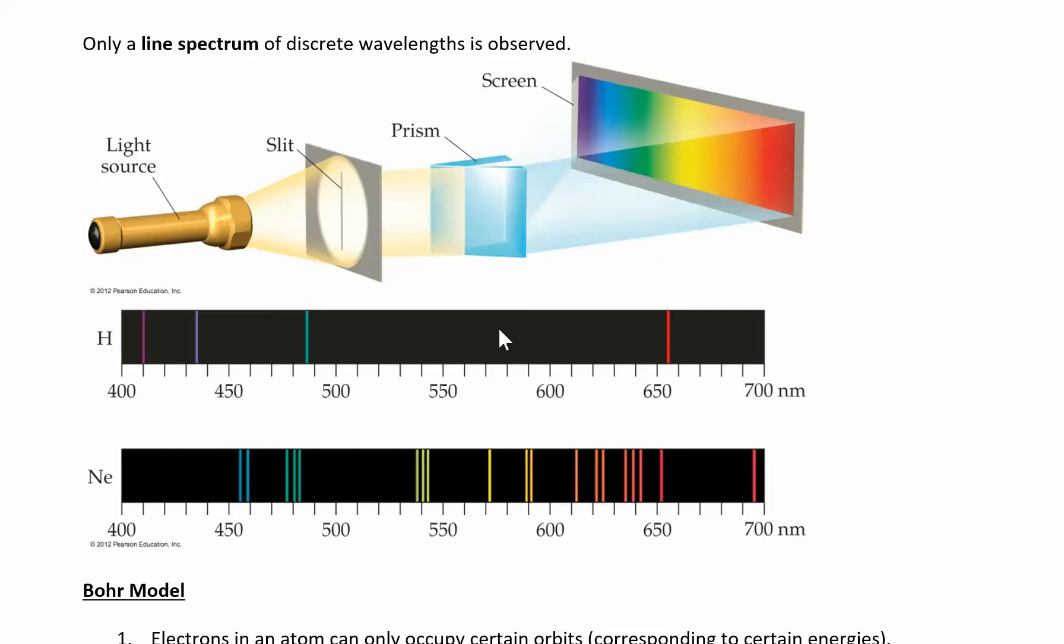You've seen this before. So you've seen probably like neon lights, they glow a certain color. They're not white lights. They don't have every single color in it.